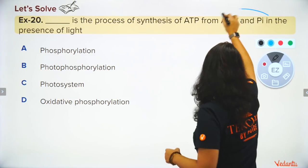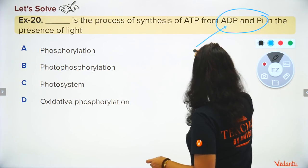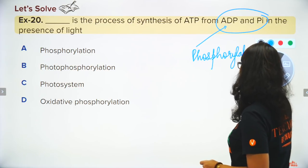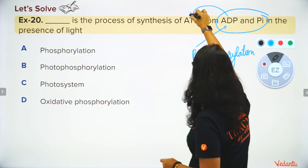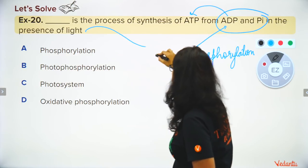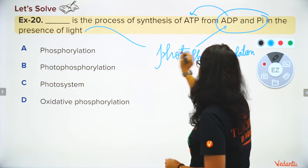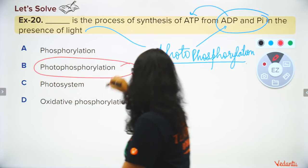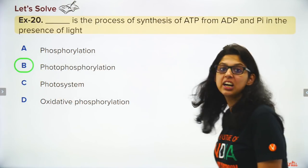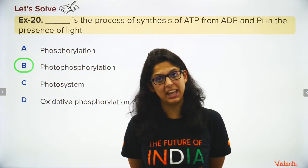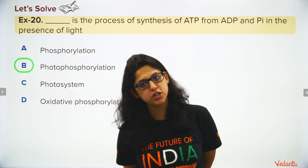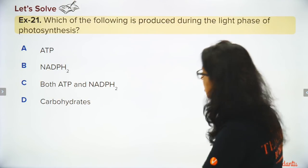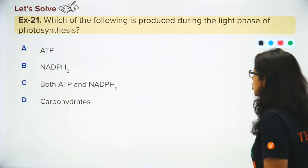Synthesis of ATP from ADP and inorganic phosphate is called phosphorylation. When this occurs in the presence of sunlight — since light travels as photons — it is called photophosphorylation. There are two mechanisms: cyclic and non-cyclic photophosphorylation, as studied in photosynthesis.